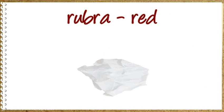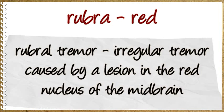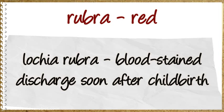Rubra means red. Rubral tremor: irregular tremor caused by a lesion in the red nucleus of the midbrain. Lochia Rubra: bloodstained discharge soon after childbirth.